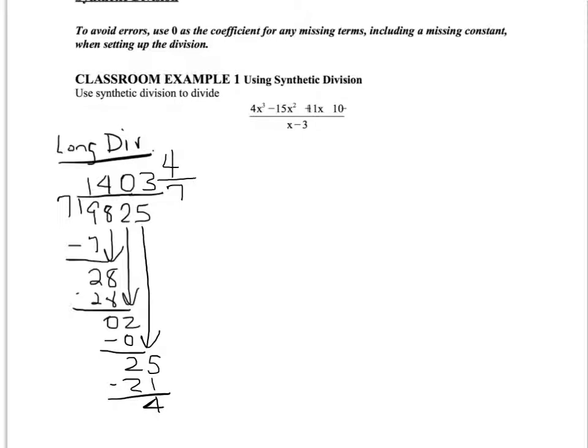Now I want to show you how to do long division with polynomials. We're going to follow the same basic procedure but notice we have variables and exponents now. Be sure that you have your numerator and denominator written in descending order — the variable with the largest exponent in your first term, descending one degree at a time. If we have any missing terms we'll have to put in a zero as a placeholder.